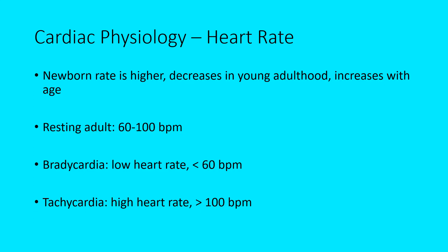Looking at heart rate, a newborn's heart rate is higher and tends to decrease as the child grows, then increases again with age. In a resting adult, the average heart rate is typically between 60 and 100 beats per minute. If you're a serious athlete, your resting heart rate may be a little lower than 60. Bradycardia is a low heart rate below 60, and tachycardia is where it's too high — greater than 100 beats per minute under resting conditions.